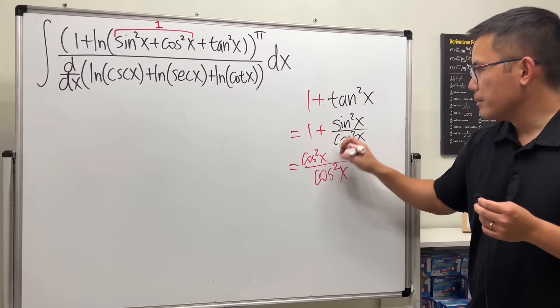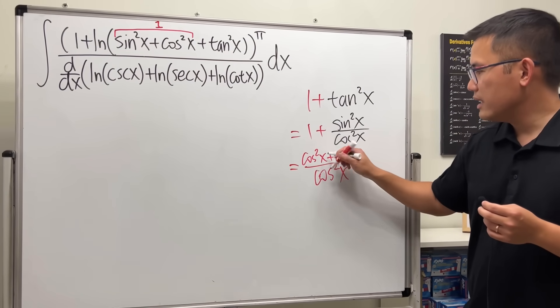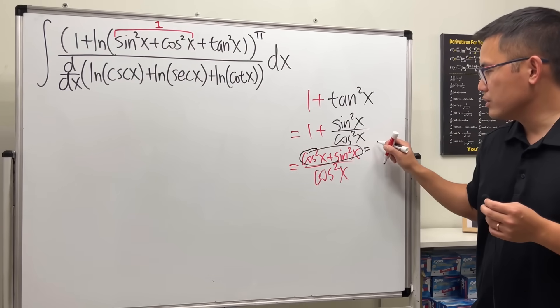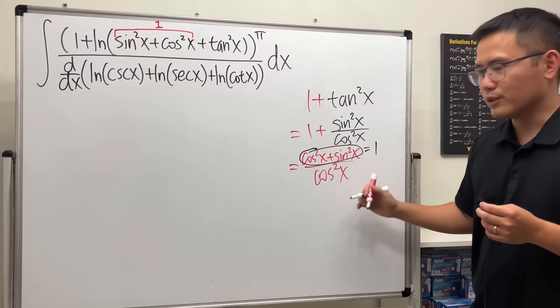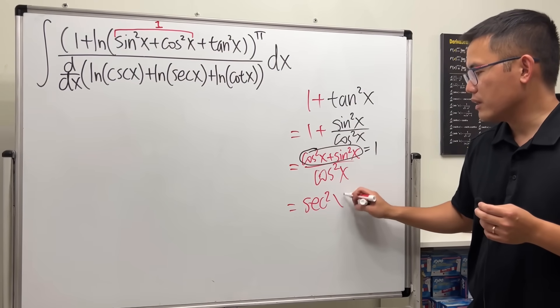So we need that right here, plus the sine squared, and this right here is, again, just equal to 1, 1 over cosine squared, we just get secant squared x.